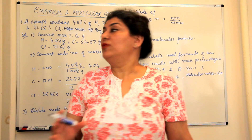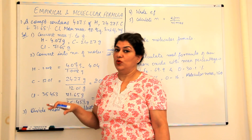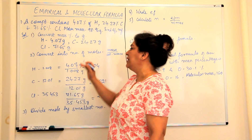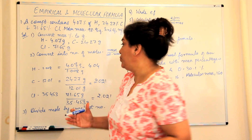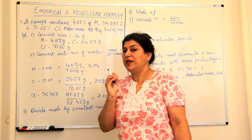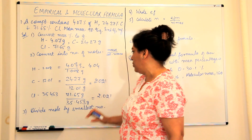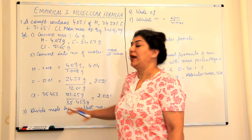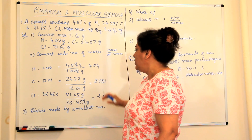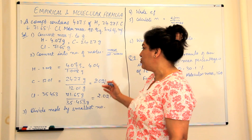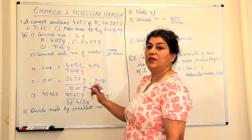So what have we done? We have found out the number of moles by converting the mass percentage of each element first into grams and then into moles. The next step is to find out the ratio between these elements. Once we arrive at the minimum ratio, that minimum ratio gives us the empirical formula. The best way to find the minimum ratio is to identify the smallest value — here 2.021 and 2.021 are the smallest. So we divide all three values by the same number to keep the ratio the same. We are finding the ratio of hydrogen to carbon to chlorine.